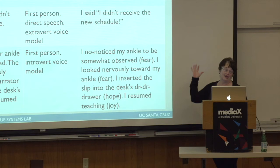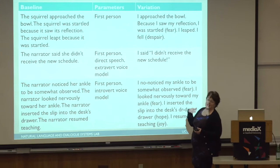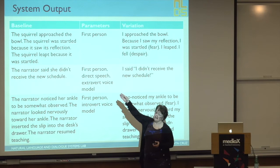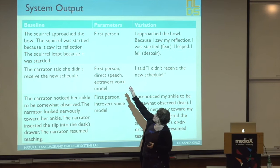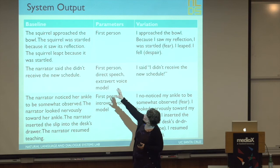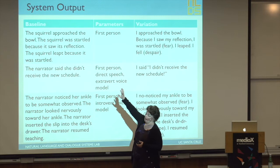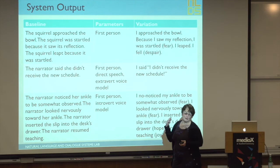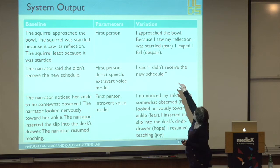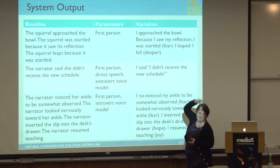Here's a little example to foreshadow what I'll explain in more detail. We have a system that takes that representation as input and generates lots and lots of different outputs. The baseline — what gets rendered directly from the underlying annotation — has each point in the timeline rendered as a sentence using the verb from the annotation: 'The squirrel approached the bowl; the squirrel was startled because it saw its own reflection; the squirrel left because the squirrel was startled.' We have a parameter where we can tell the story from the first person perspective — from the perspective of the squirrel or any other character — and we can get: 'I approached the bowl because I saw my reflection; I was startled; then I leapt and I fell.' We can generate that automatically.